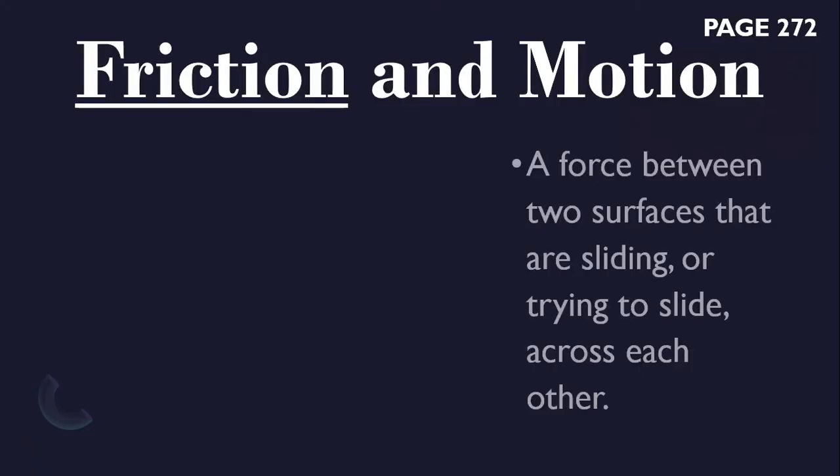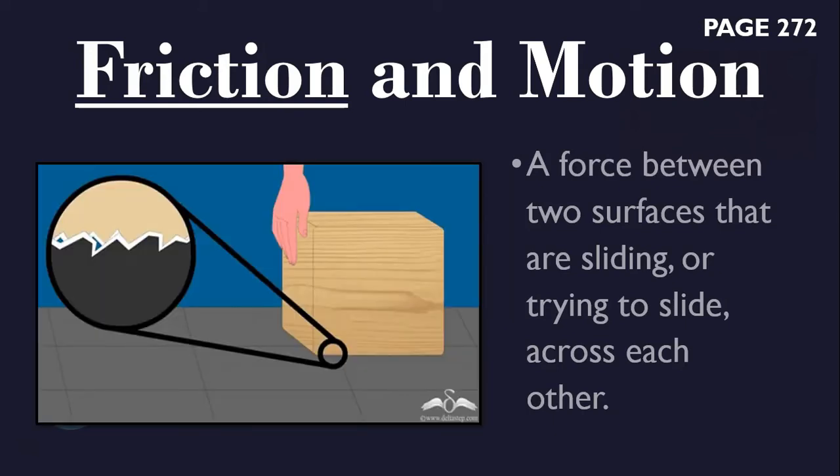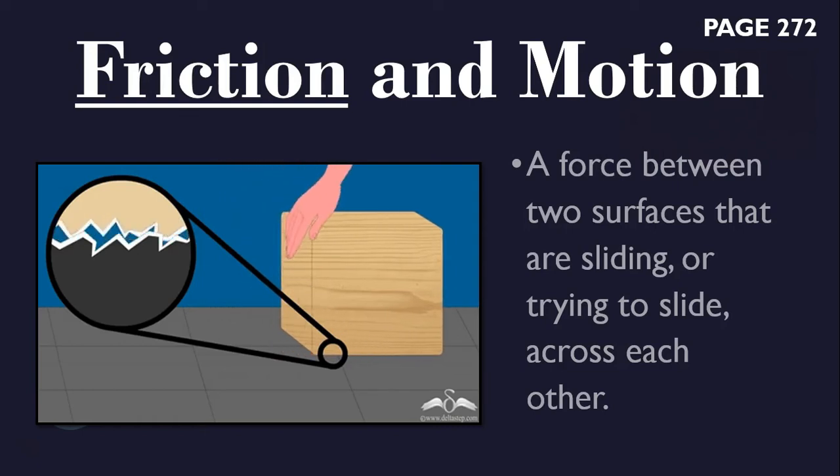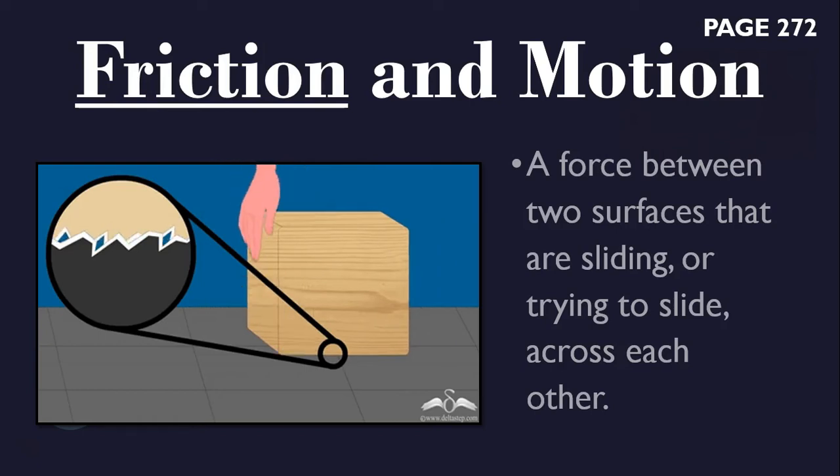Now let's talk about friction. Friction is a force between two surfaces that are sliding or trying to slide across each other. When you try to push or pull a wooden crate on the floor, the surfaces slide against one another. The force you exert is opposed by friction.